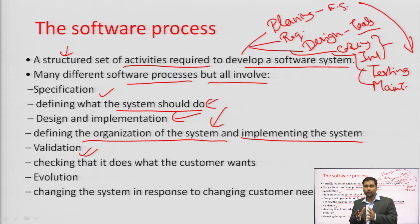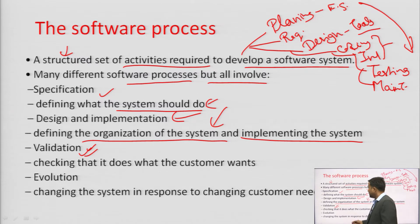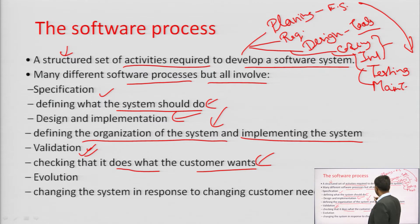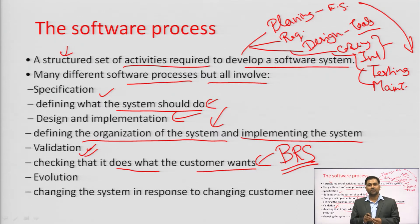Validation means checking whether the software project runs and executes as per the requirements — checking what the customer wants. We check against the BRS (Business Requirement Specification). If the customer requirement is met, it means we have the right product with the right functions working. Otherwise, we need to make changes.